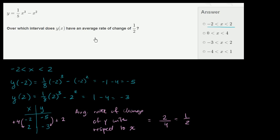So it does look like the average rate of change over this interval right over here is 1/2. So we got lucky in this situation. Our first choice — and this is a multiple choice, not a multi-select — so our first one met our criteria, so we know that that's the answer. But let me do one more of these other ones to show you why that is not the answer.